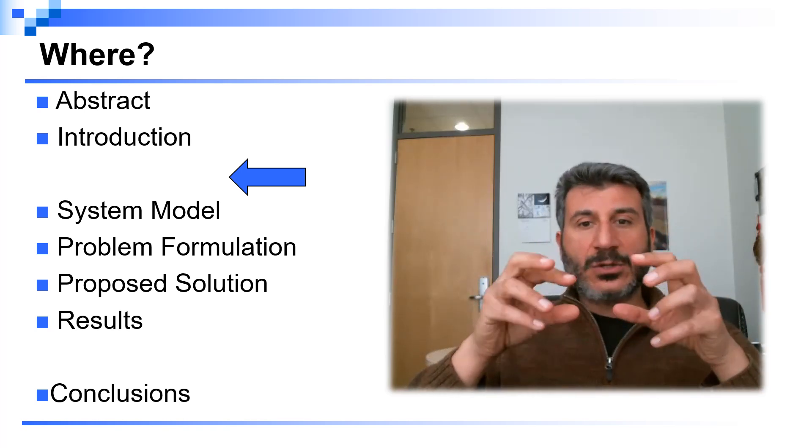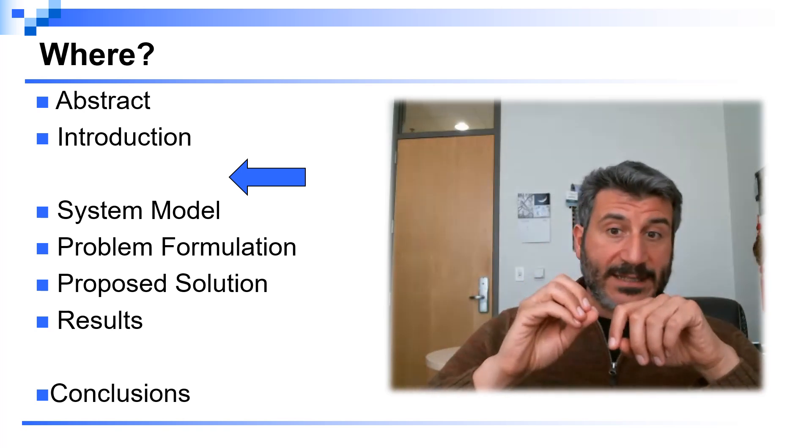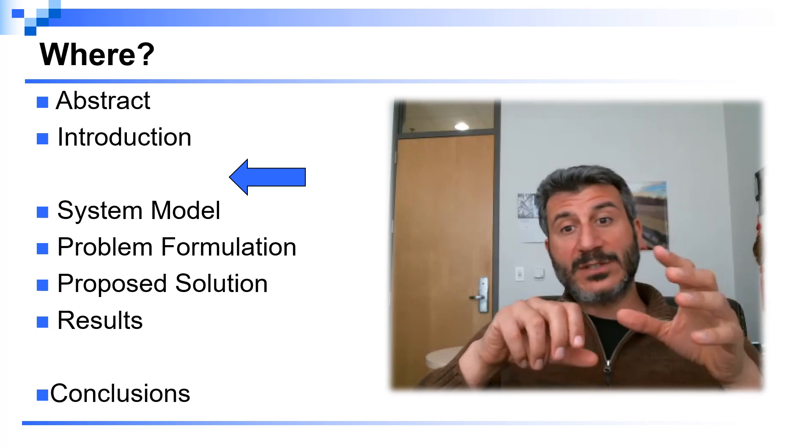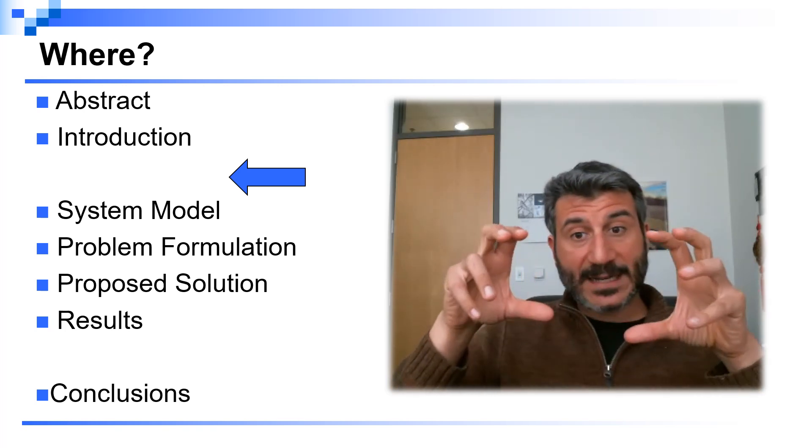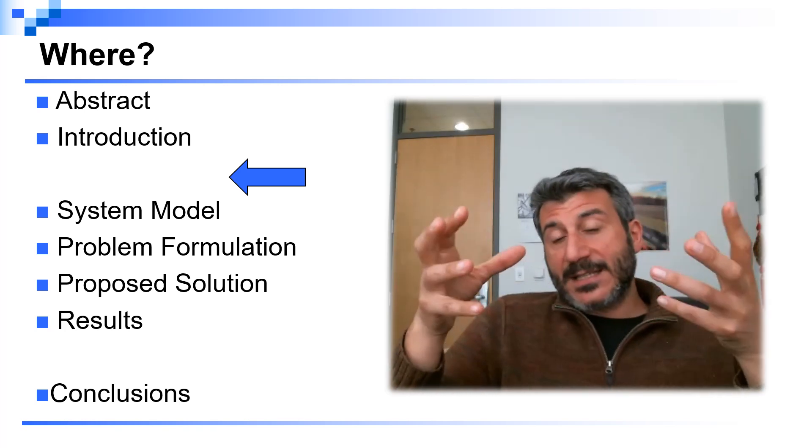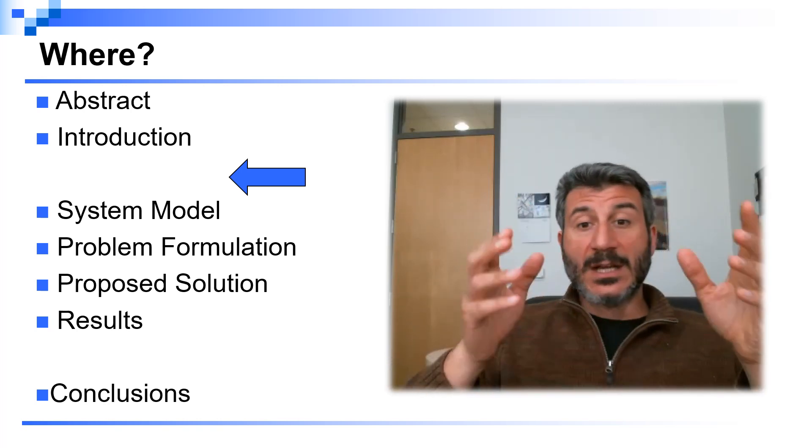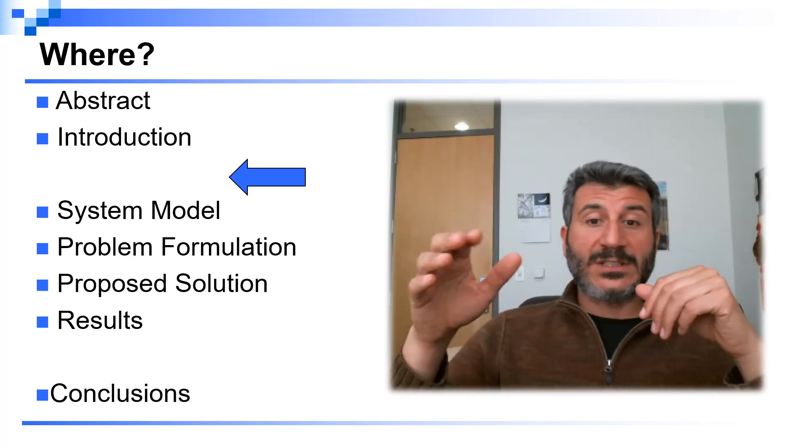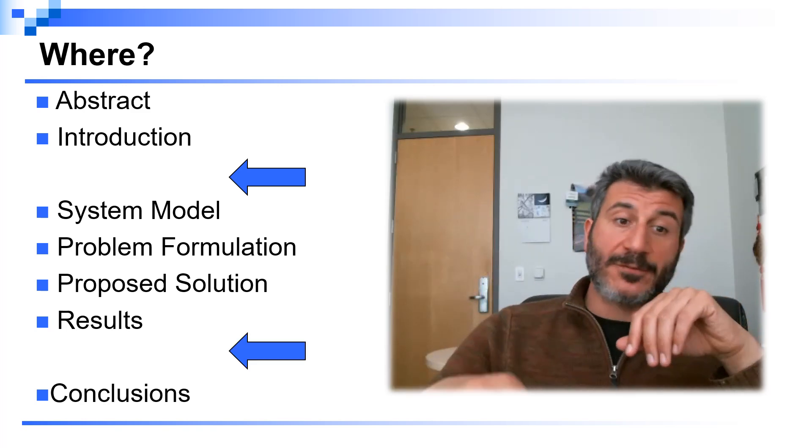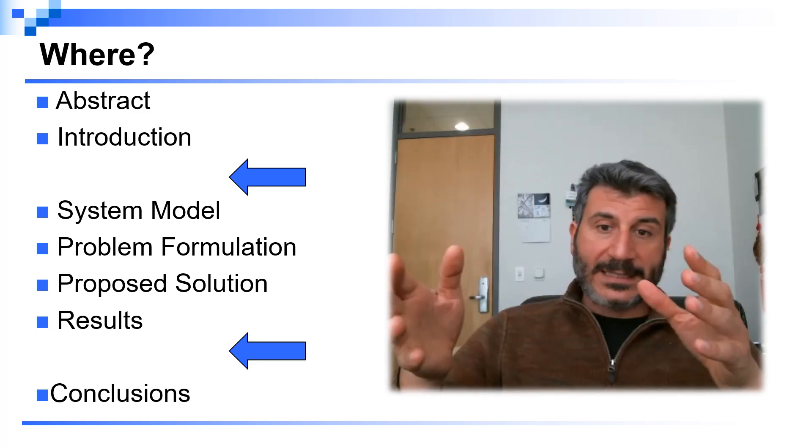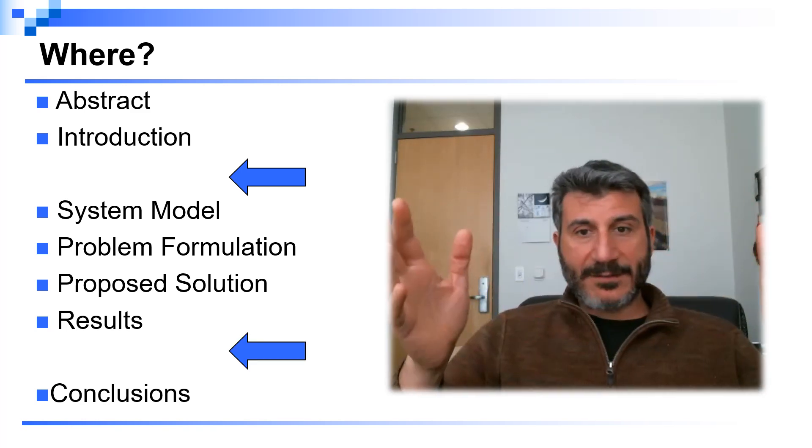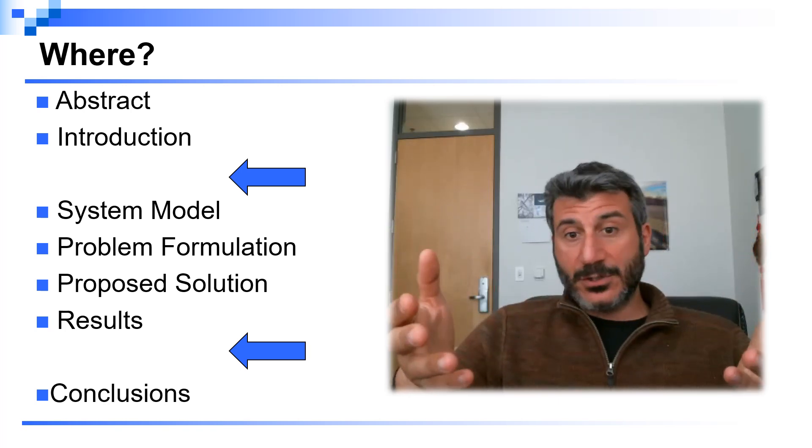However, sometimes the introduction already includes some of that. And if you have watched my videos before, you know that in the introduction, you're going to have a small paragraph that summarizes basically what are the novelties with respect to the previous works. So an alternative could be to put it after the results section and before the conclusions. Some people like this, some people don't. I do not have a specific preference, and of course, it depends on your taste.